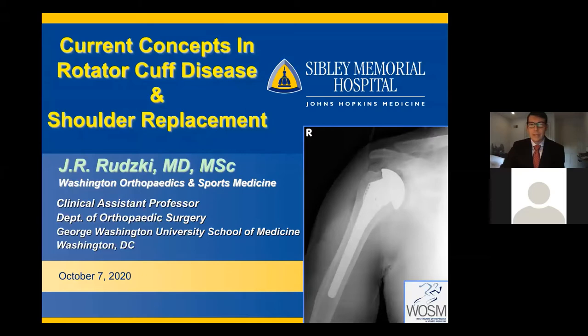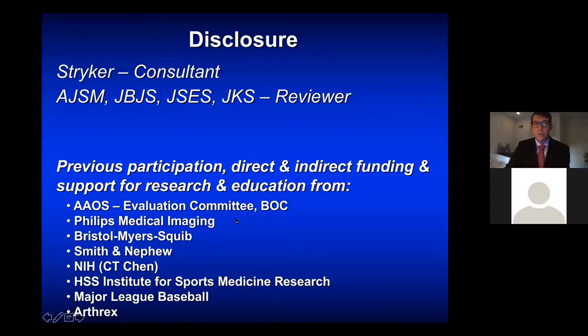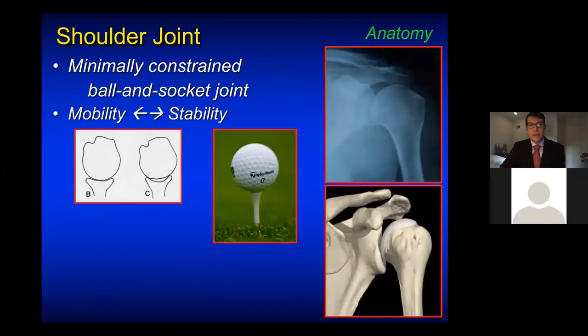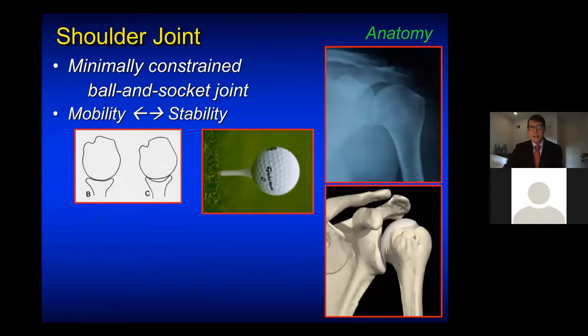Tonight's focus will be rotator cuff disease and shoulder replacement. I've always been fascinated by the shoulder starting in medical school. It's a minimally constrained ball and socket joint, unlike the hip that has intrinsic stability from the bony anatomy. There's a trade-off with this of mobility for stability. I like to explain it to patients by saying it's like a golf ball sitting on a tee sideways, and that gives us many elegant planes of motion that you simply can't get with your hip.